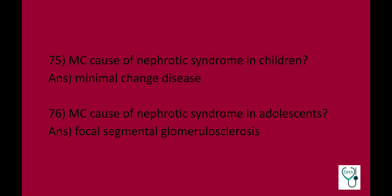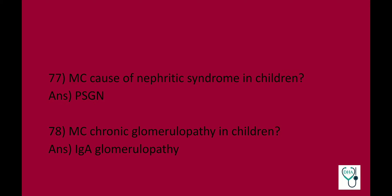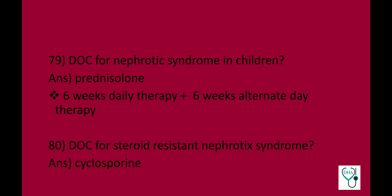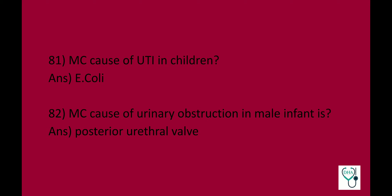Genitourinary system. Most common cause of nephrotic syndrome in children is minimal change disease; in adolescence it is focal segmental glomerulosclerosis. Most common cause of nephritic syndrome in children is PSGN. Most common chronic glomerulopathy in children is IgA glomerulopathy. Drug of choice for nephrotic syndrome in children is prednisolone — 6 weeks daily therapy followed by 6 weeks alternate day therapy. For steroid-resistant nephrotic syndrome, the drug of choice is cyclosporine. Most common cause of UTI in children is E. coli. Most common cause of urinary obstruction in a male infant is posterior urethral valve.